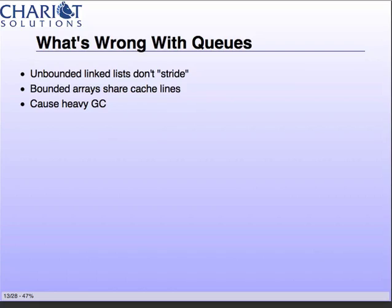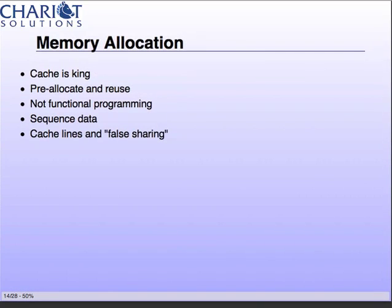What's wrong with queues? You have two types: linked lists, which are unbounded and can theoretically be as big as your memory space, or bounded arrays. Unbounded linked lists are not contiguous in memory, so they can't stride and you don't get that prefetching. With bounded arrays, data shares a cache line — think about head and tail potentially on one cache line. If you do anything with it and somebody else is updating at the same time, that arbitration hurts performance. Also, any time you read from a queue you're performing a write because you're pulling something out. As a result, you get heavy GC. Queues are not an extremely performant data structure.